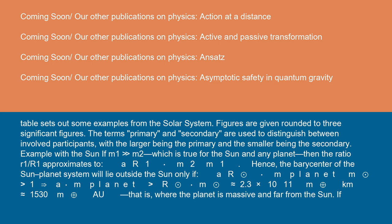...will lie outside the Sun only if a × M_planet/M_sun > R_sun ≈ 2.3 × 10^11 meters ≈ 1,530 solar radii in AU. That is, where the planet is massive and far from the Sun.